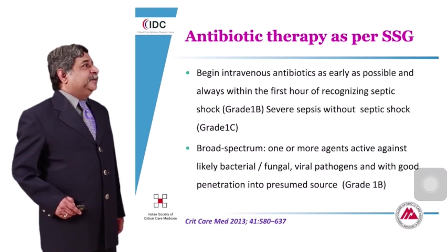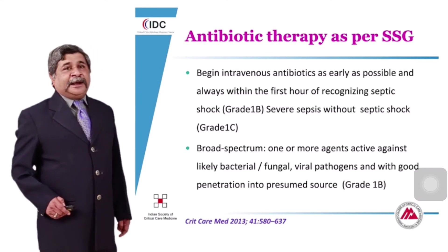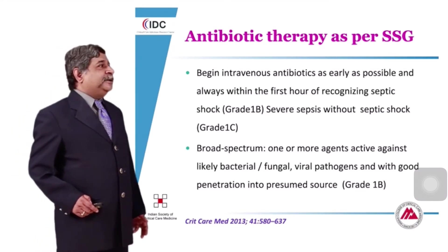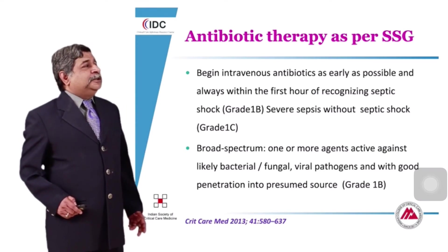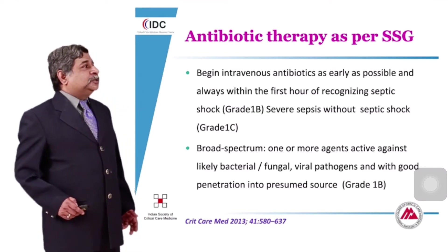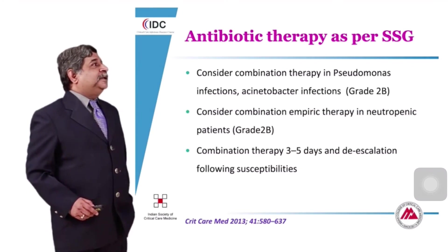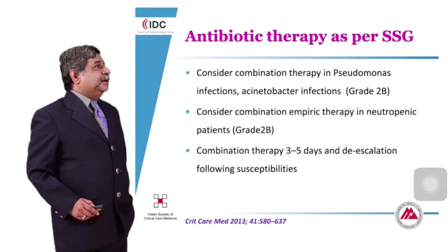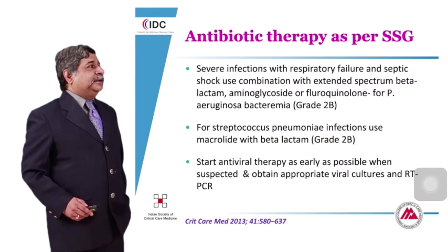Antibiotics should be broad spectrum — use one or more agents active against likely bacterial, fungal, or viral pathogens — and ensure good penetration into the presumed source. For example, quinolones work well for urinary tract infections as they are excreted in the kidney. Consider combination therapy for Pseudomonas and Acinetobacter infections. Consider combination empiric therapy in neutropenic patients. Consider therapy for 3 to 5 days then de-escalate based on susceptibility results.